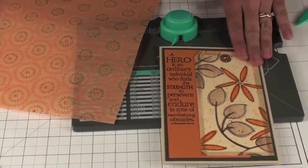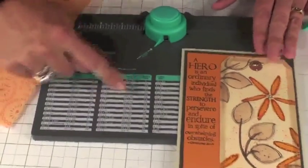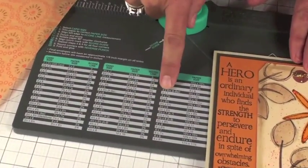Hi, Trisha Morris here from Club Scrap and I want to make an envelope for my handmade card using We Are Memory Keepers brand new envelope punch board.